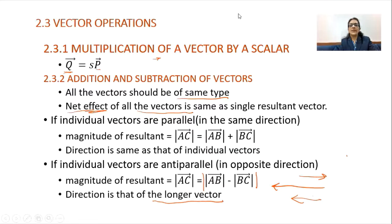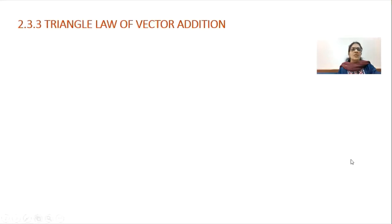The next operations are when vectors are not exactly parallel or anti-parallel, but have a certain angle between them. We cannot add or subtract them so easily; we have to apply some laws. After discussing addition and subtraction of parallel or anti-parallel vectors, we will now see how vectors inclined to each other can be added together using the triangle law of vector addition.